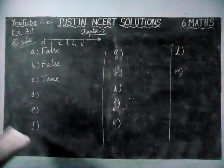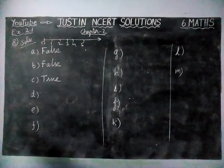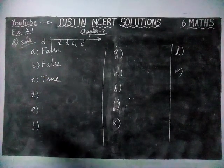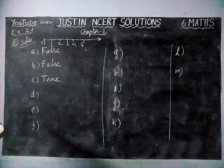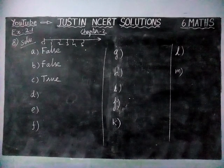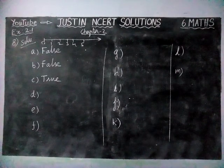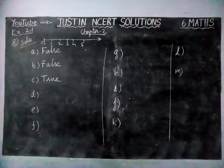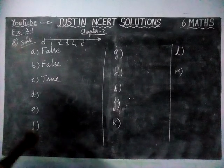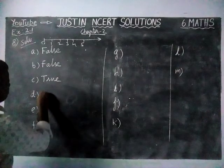Next, option D: '600 is the successor of 599.' When we add 599 plus 1, we get 600. Therefore, this is true.